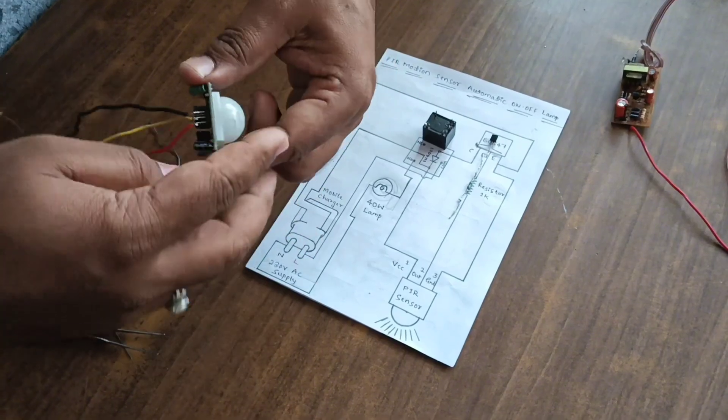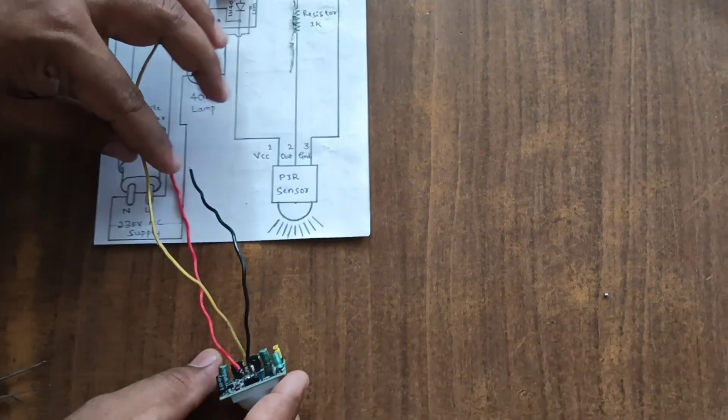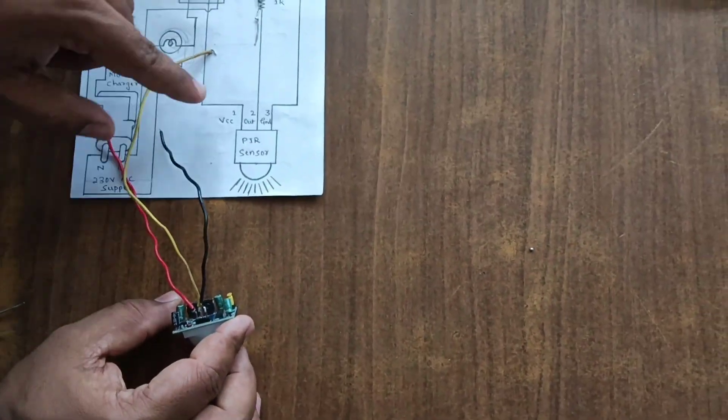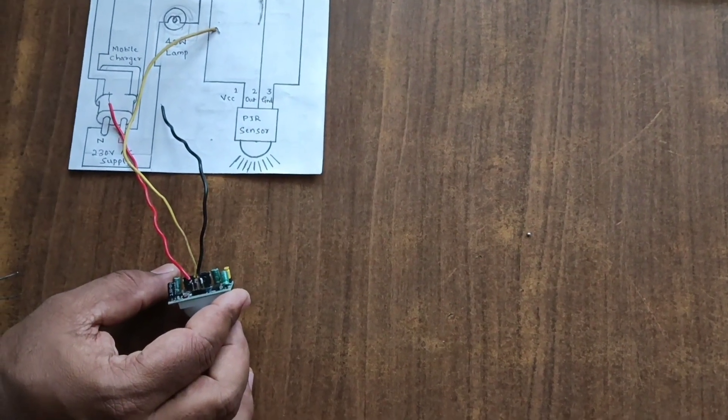We shown here in this diagram. First point VCC, second output, third is ground.